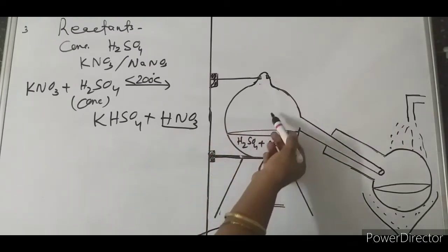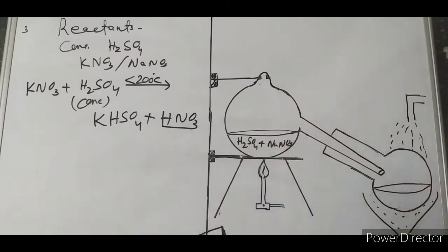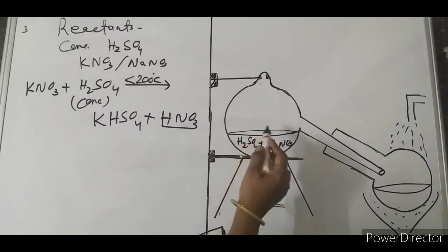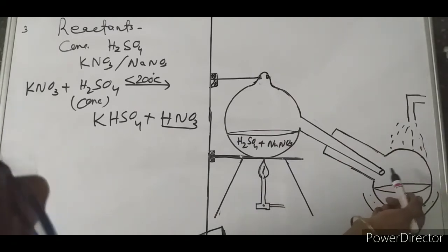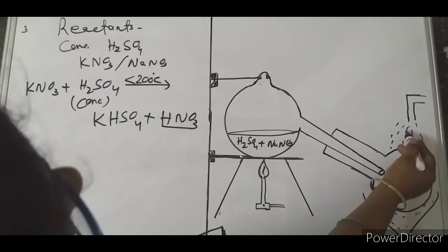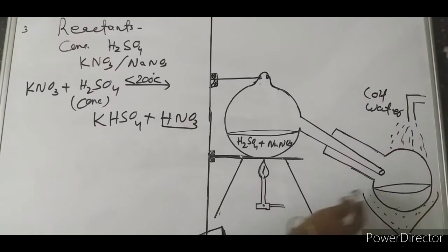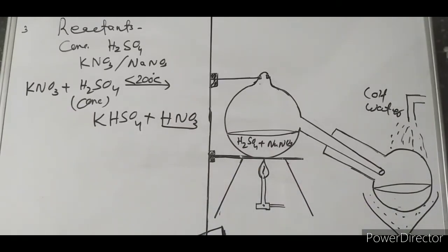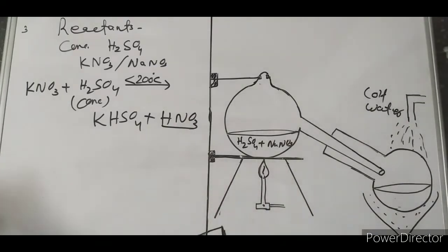The vapors of nitric acid that evolve are collected in a container. Since they are in vapor form, cold water is used to cool and condense them into liquid nitric acid.